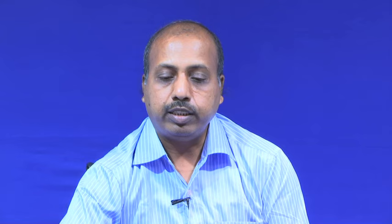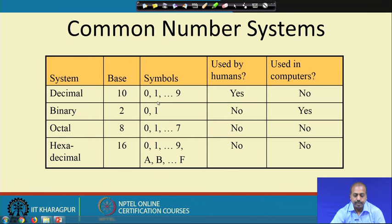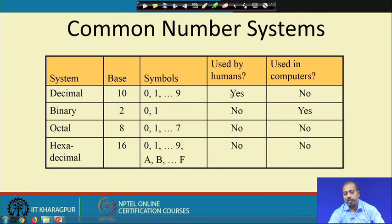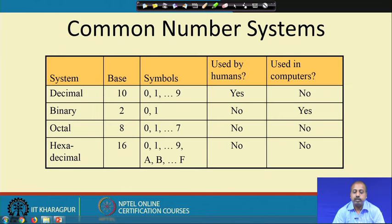Going back to the number systems — their base values and symbols. We can say whether they are used by humans or not. Someone might be very comfortable with hexadecimal, but normally from our school days we are familiar with decimal, so we say decimal is used by humans. Binary, octal, and hexadecimal are used by computers. Decimal is not used in computers; binary, octal, and hexadecimal are.